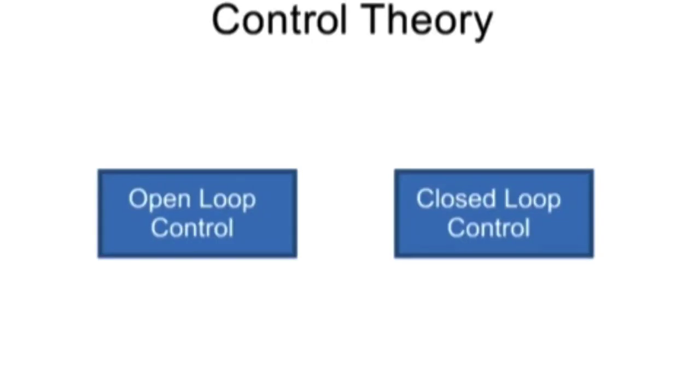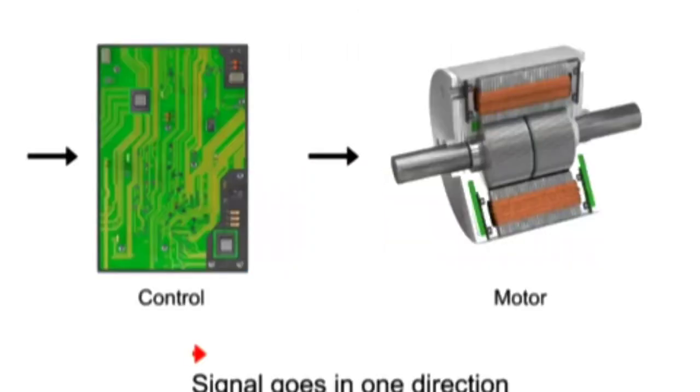Categories of control theory are defined as open-loop and closed-loop control. In an open-loop system, the output is not measured or monitored for comparison with the system set point.